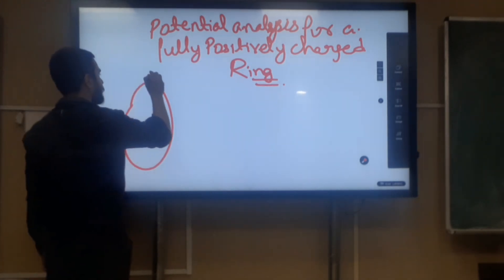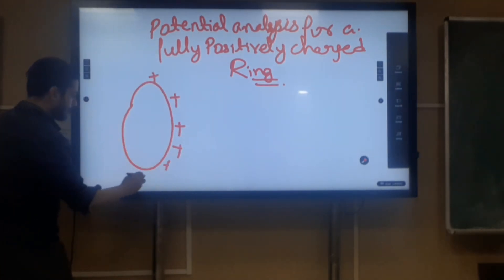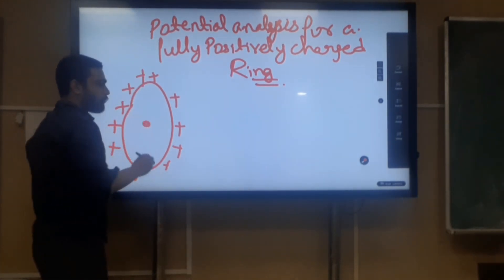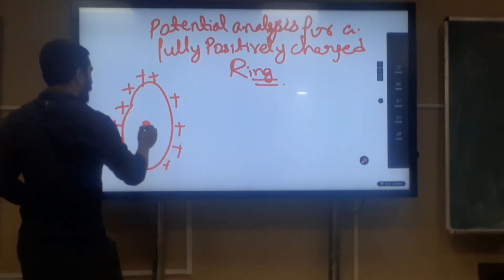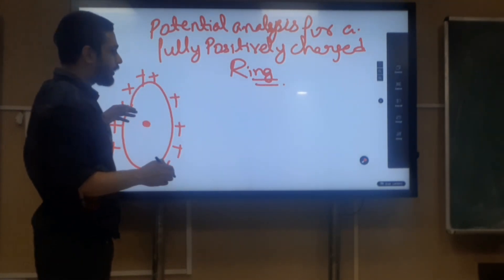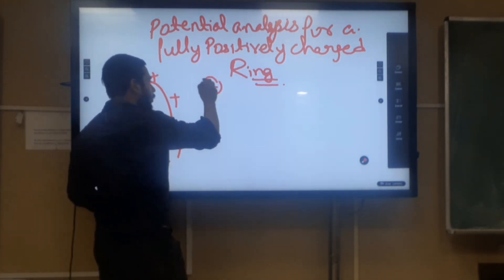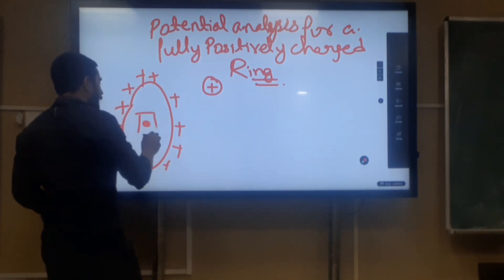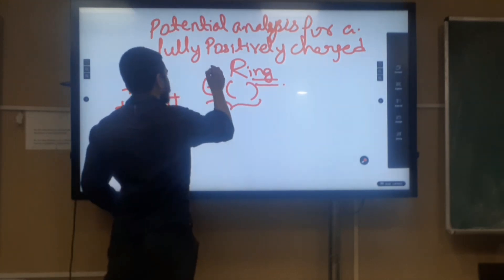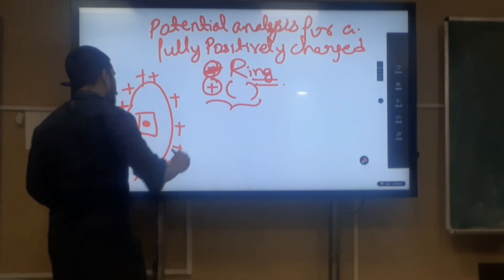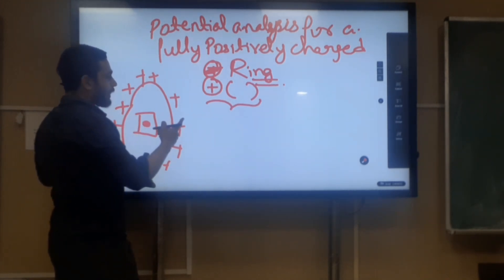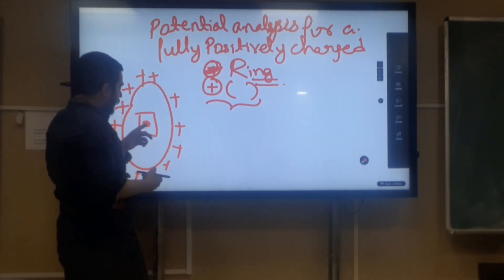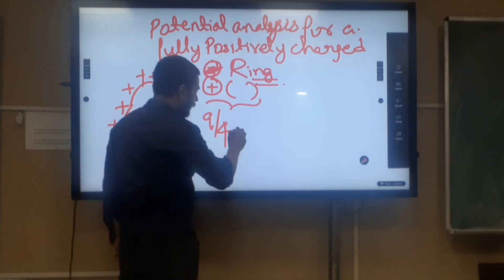Suppose this is the fully positively charged ring with positive charges throughout. At the center we want to find the potential. For potential, there is no vector sum — we only consider the sign and value of the potential. We consider only the plus or minus sign and the magnitude of the potential. For the whole positively charged ring, the potential at the center will be Q upon 4 pi epsilon naught R, where R is the radius of this ring.